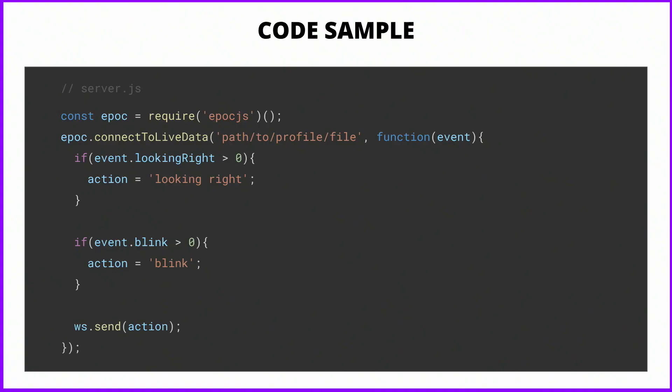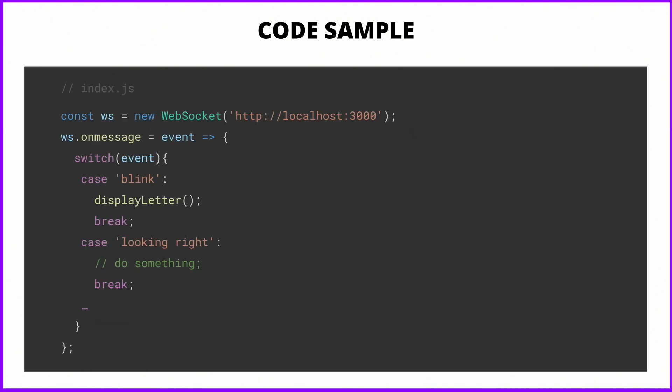Code samples — how do you actually do stuff like that? In the server, that's kind of all you have to do. You start by requiring the module, and then I expose two functions: either connect to live data, where you give it the path to the file saved when you used their interface to train your thoughts, or connect to a composer. When you connect to live data, you get an event object with different properties, and each property comes back as 0 or 1 — 0 if not activated, or 1 if it is activated. Then I just send an action via WebSocket to the frontend. In the frontend, you just have a WebSocket on the same port, and when it gets a message from the server, depending on the message — blinking or looking right — you just do things.